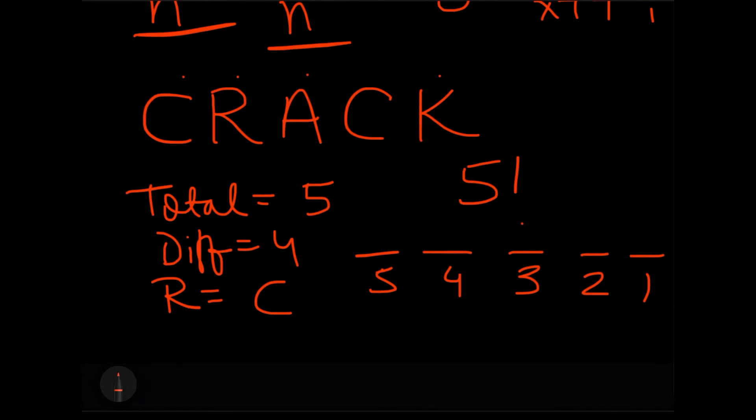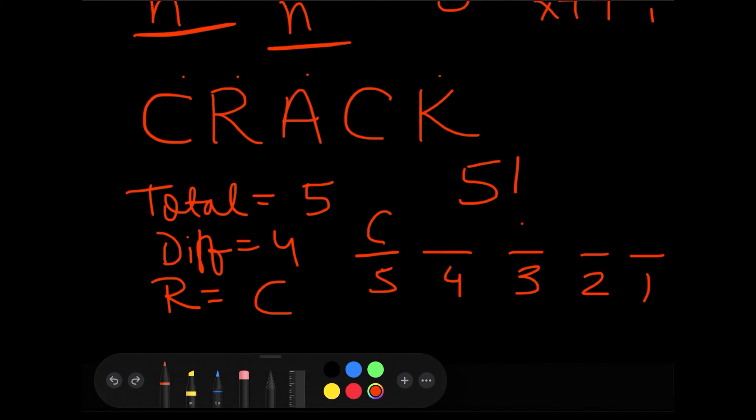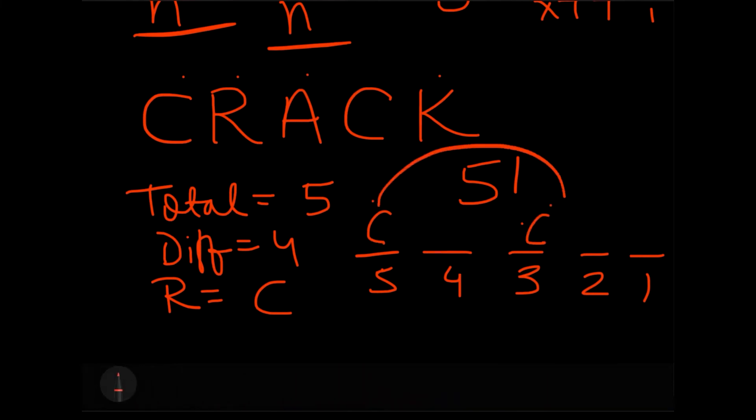But the condition arises that you must have seen in your books, or if you have visited PnC before, you must have seen that we are dividing it by some number because C is being repeated. The reason why we are dividing this is because it really doesn't matter if I have a C here or I have a C there. This C and this C can interchange its position and it will not make any difference in the arrangement.